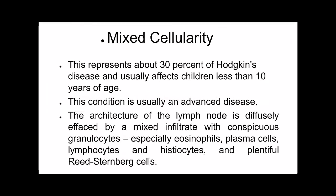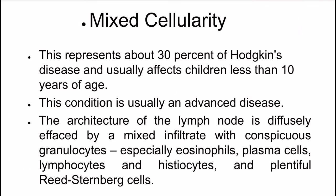The next histological type is mixed cellularity. This represents about 30% of Hodgkin's disease and usually affects children less than 10 years of age. This condition is usually an advanced disease. The architecture of the lymph node is diffusely effaced by a mixed infiltrate with conspicuous granulocytes, especially eosinophils, plasma cells, lymphocytes, and histiocytes, and plentiful Reed-Sternberg cells.